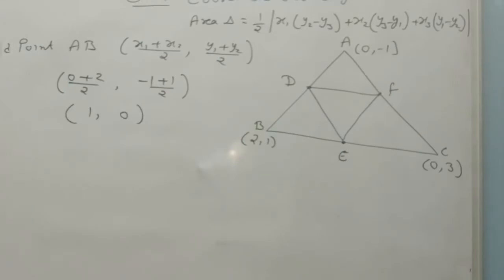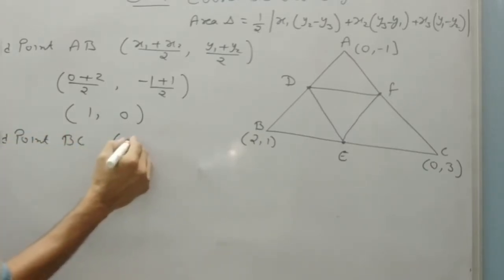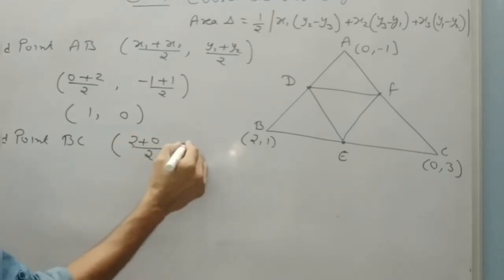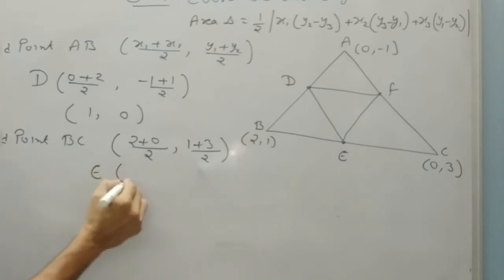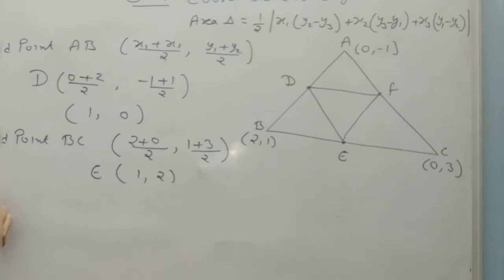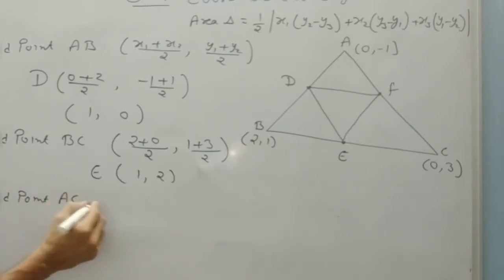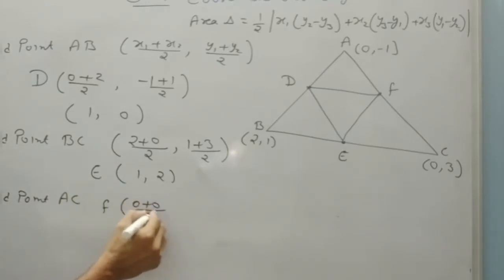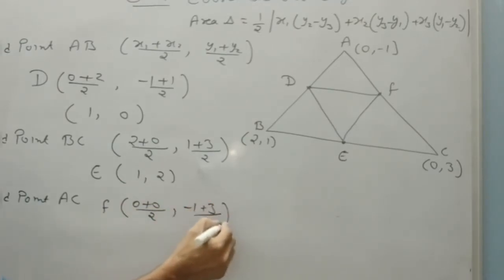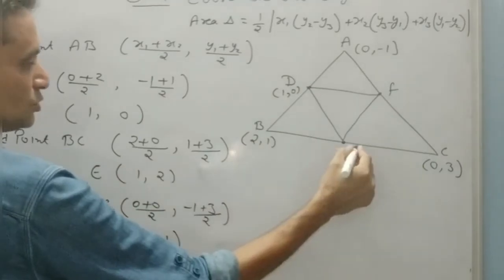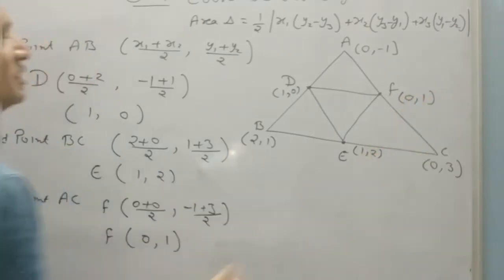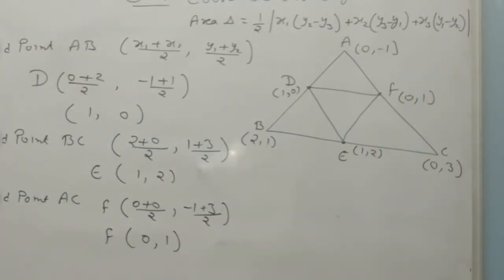Midpoint formula is (x1 plus x2)/2, (y1 plus y2)/2. Midpoint of AB will be (0 plus 2)/2 and (minus 1 plus 1)/2, which is (1, 0). Midpoint of BC will be (2 plus 1)/2 and (2 plus 0)/2, wait — that is coordinate of E which is (1, 2). Similarly midpoint of AC gives the coordinate of F as (0 plus 0)/2 and (minus 1 plus 3)/2, so F is (0, 1). So the three midpoints are D(1,0), E(1,2) and F(0,1).